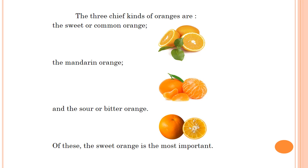The three chief kinds of oranges are the sweet or common orange, the mandarin orange, and the sour or bitter orange. Of these, the sweet orange is the most important.